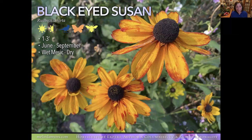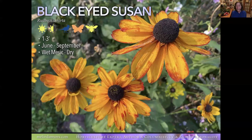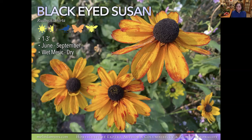Rudbeckia hirta — another Black-Eyed Susan — takes full sun to part shade but is a biennial, meaning the first year it puts up leaves, the second year it flowers, sets seed, and dies. However, it reseeds so readily that it acts like a perennial, as long as you don't weed out the first-year rosette. You can plant two plants two years in a row so you're getting seed set every year. Long season of bloom, birds love the seeds, pollinators love the flowers. Very drought tolerant once established.